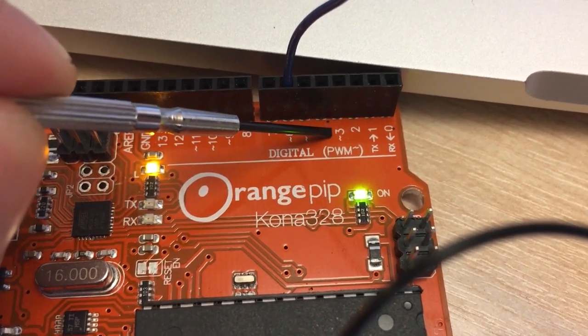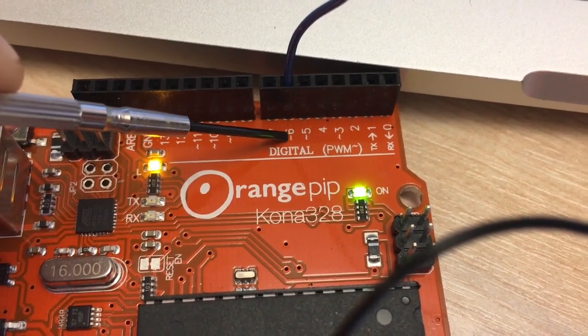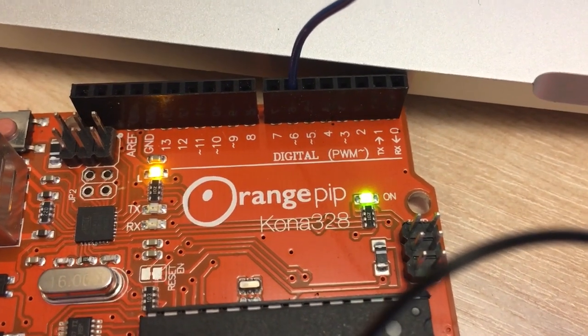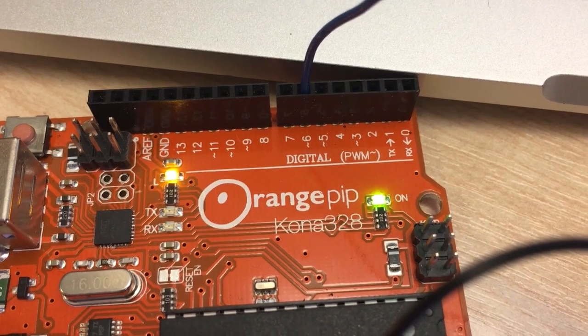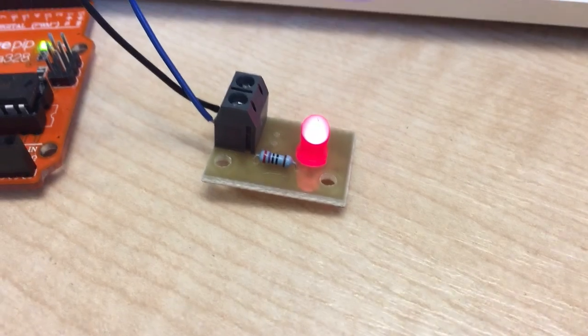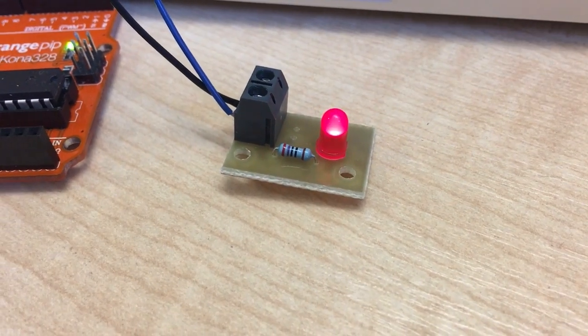So the ones with the squiggles next to them, so 3, 5, 6, 9, 10, and 11, are the ones that can do pulse width modulation, or, in other words, can do analog writes. So we've got the other end of my LED hooked up to pin 6, because that is how we're writing the voltages that are between 0 and 5 volts.